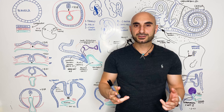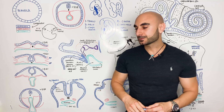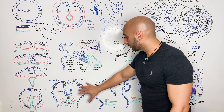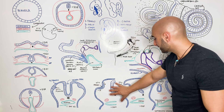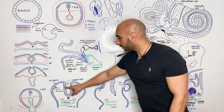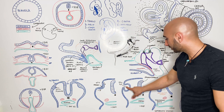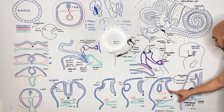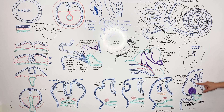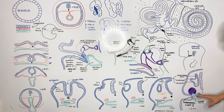Now let's talk about the development of the middle ear. In the previous video we focused on the otic placode invaginating, becoming an otic pit, then the otic vesicle, and then differentiating into a saccular portion, utricular portion, and a lymphatic duct, eventually becoming the inner ear.